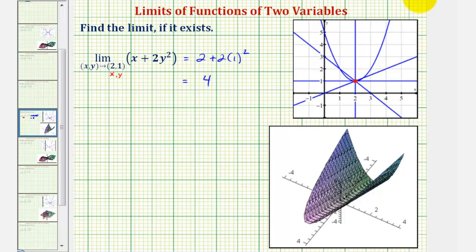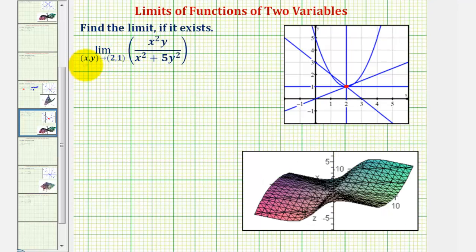Let's look at a second example. Here we have the limit as (x, y) approaches (2, 1) of our rational function here. Notice when x is 2 and y is 1, our function is continuous, which means once again we can perform direct substitution to find this limit.